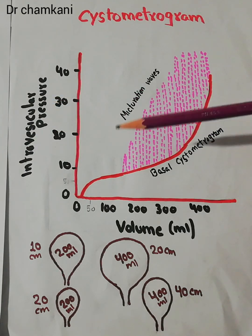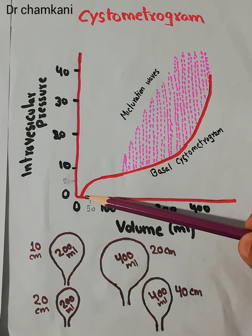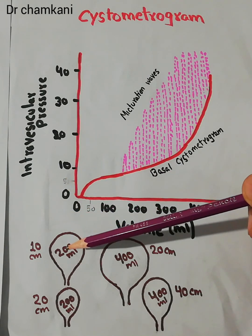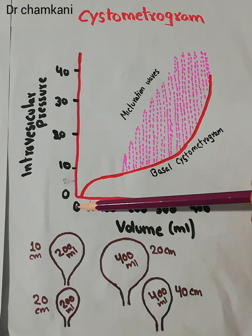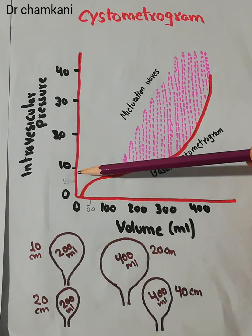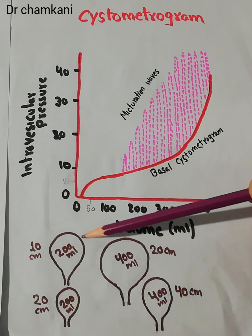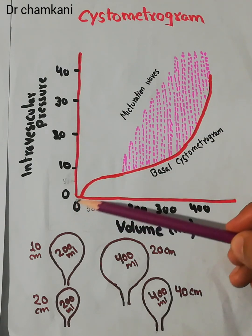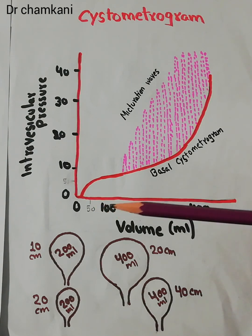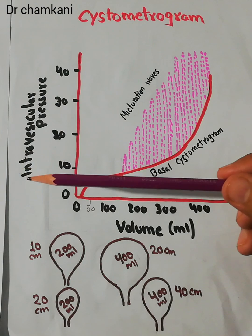In this graph, when the volume of urine in the urinary bladder is zero, the intravesicular pressure is also zero. When urine starts collecting in the urinary bladder, the volume increases on the x-axis and the tone in the wall of the urinary bladder also starts increasing. After accumulation of around 50 ml of urine, the pressure reaches around 5 cm of water.